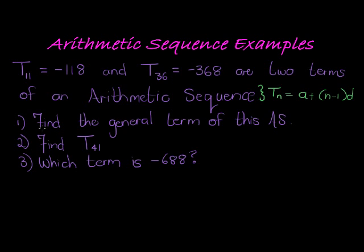And the first thing that they ask us is to find this general term, obviously by finding the parameters a and d, a being the first term and d being the constant difference. Now, clearly we can't see it just by looking at it.